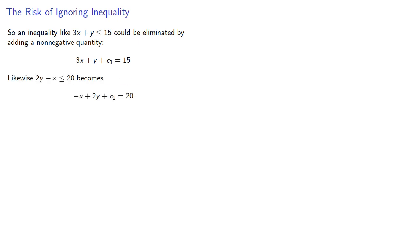Likewise, 2y minus x less than or equal to 20 becomes... and so on for the others. These new variables we've introduced are referred to as slack variables.